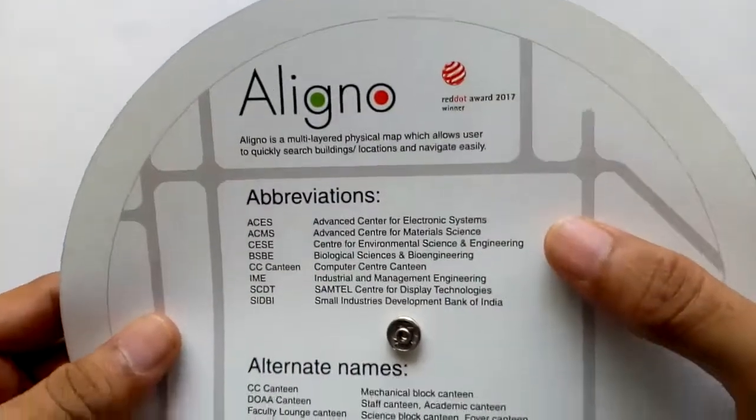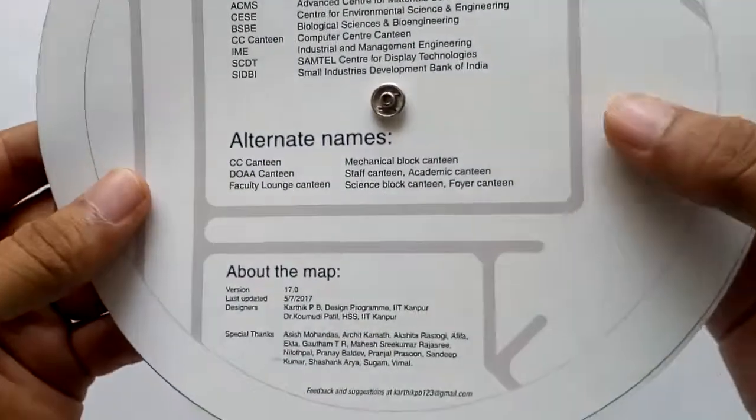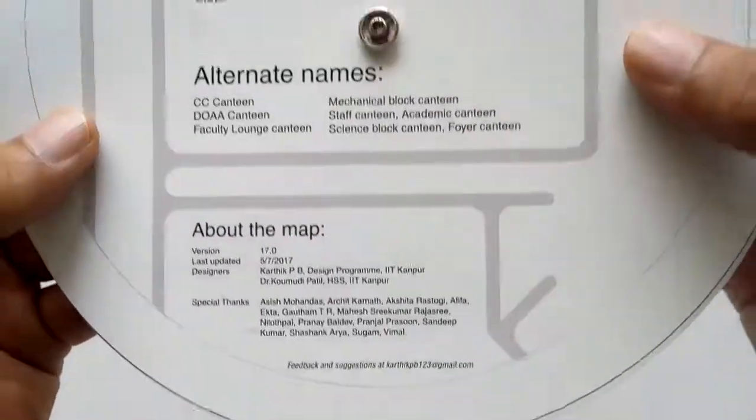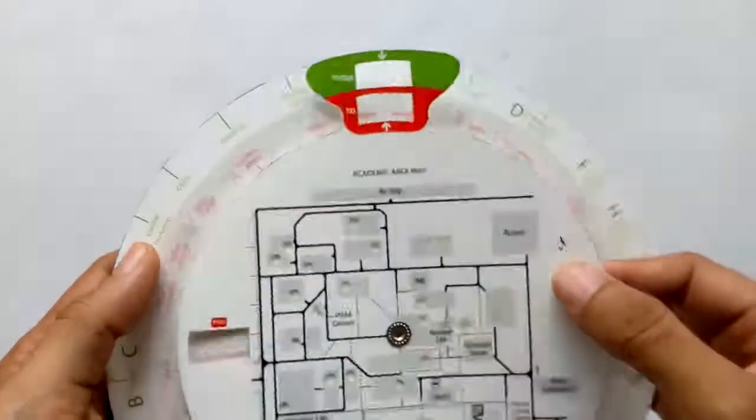The back side of the Aligno has abbreviations, alternate names of the locations, and the credits. Hope this was interesting, thank you!